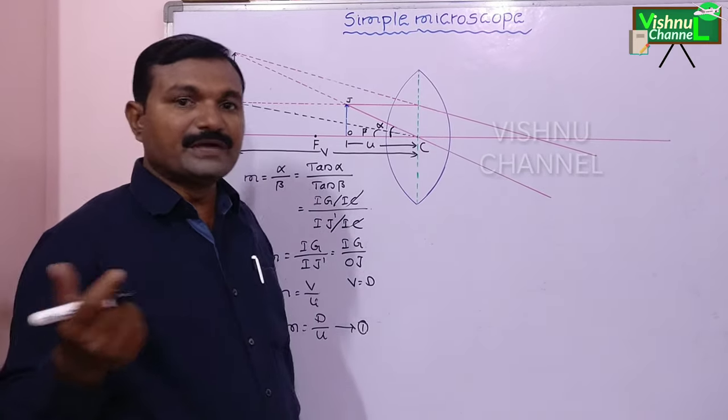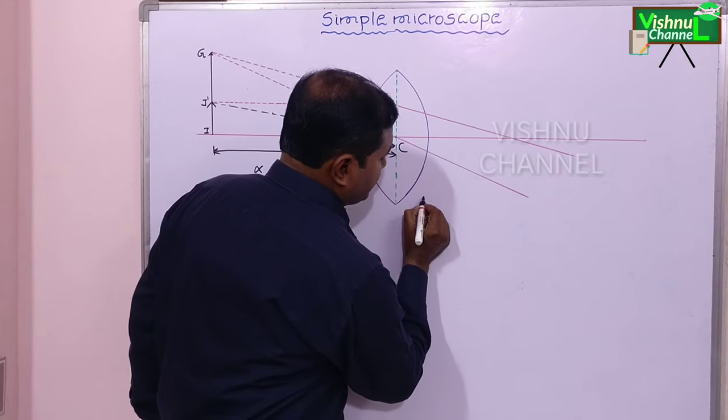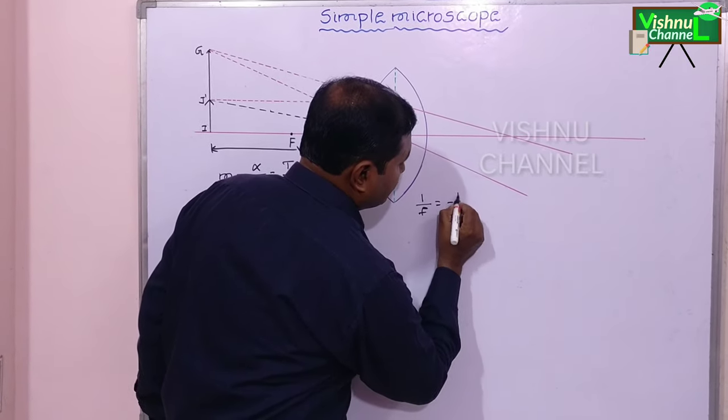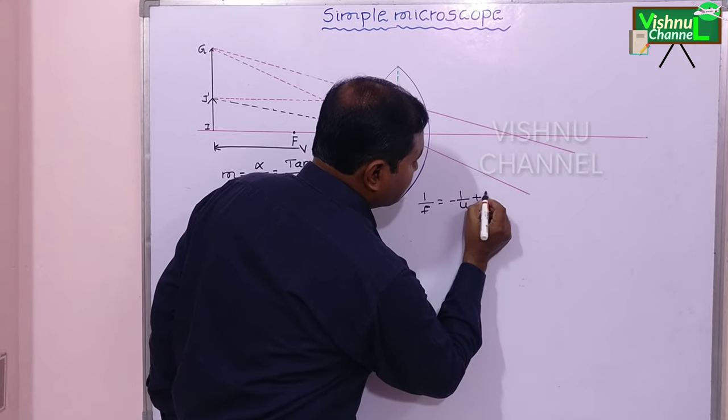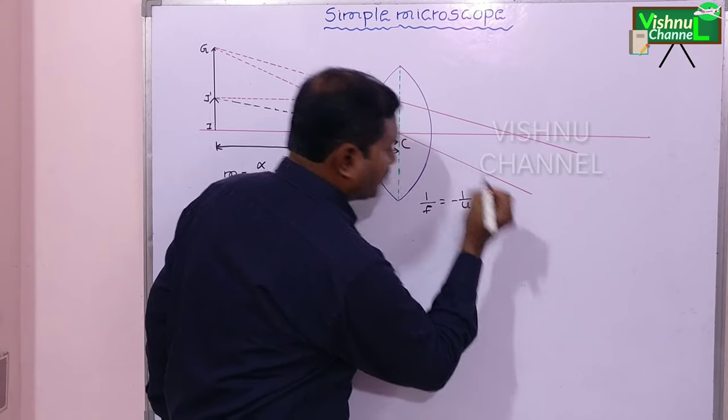Already we know Lenz Maker's formula. From Lenz Maker's formula, 1 by S is equal to minus 1 by U plus 1 by V.